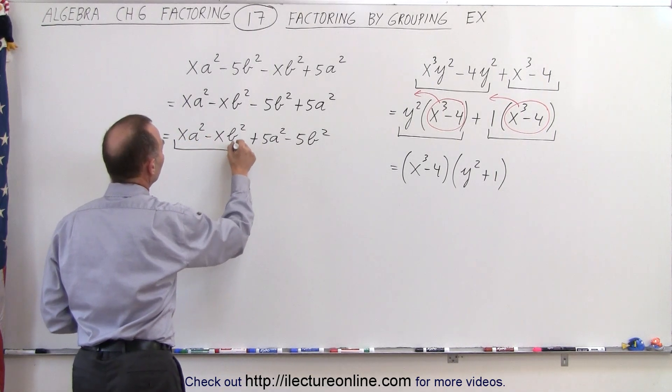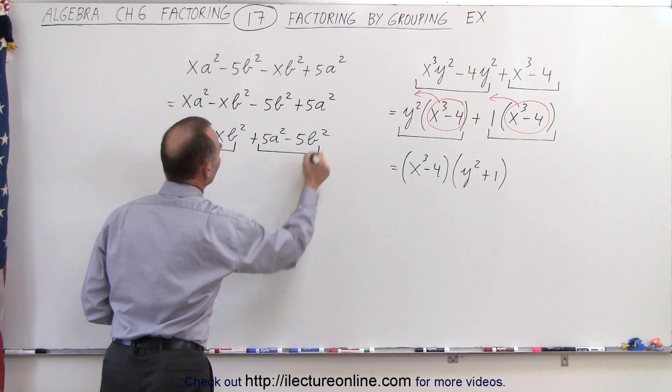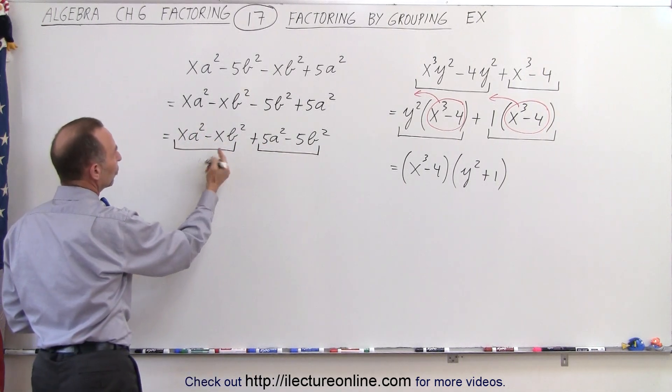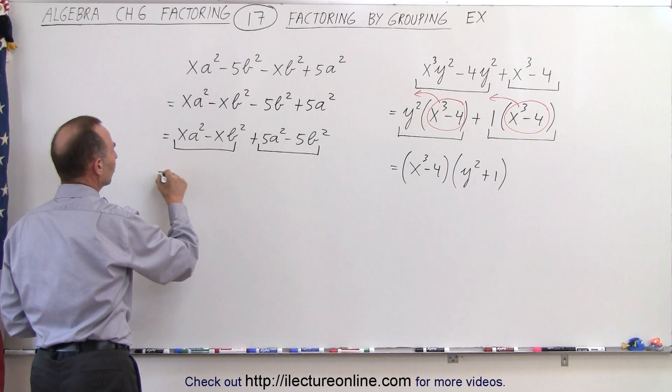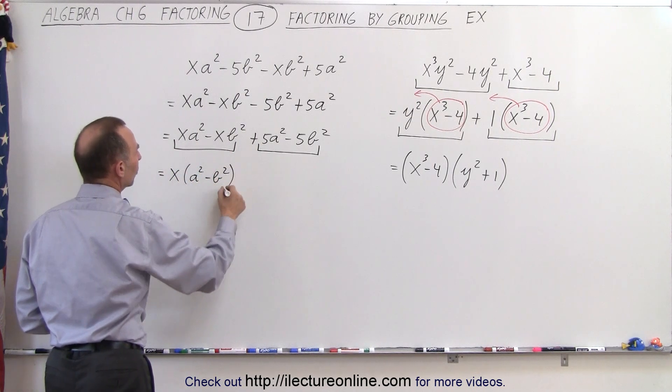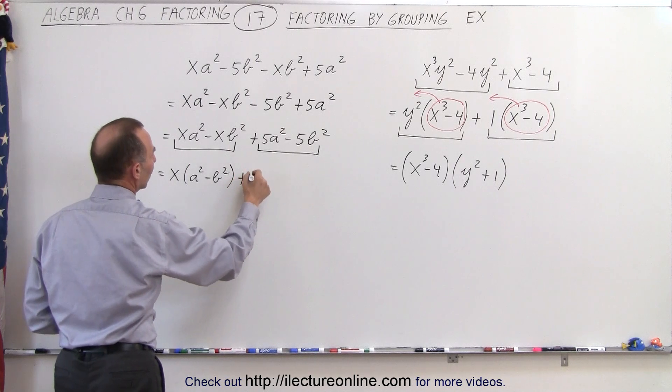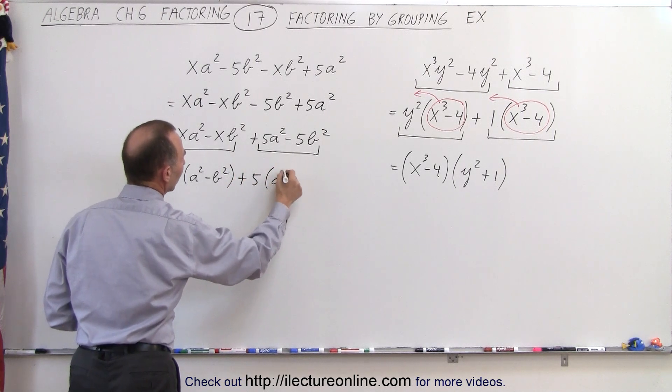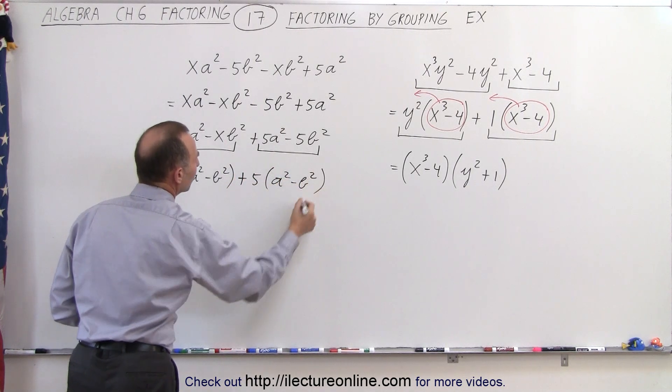Now I'm going to group these two together and group these two together. Out of the first two I can factor out an x, so this is equal to x times a-square minus b-square, and here I can factor out a five, so this becomes five times a-square minus b-square.